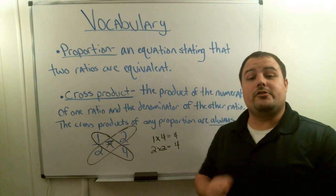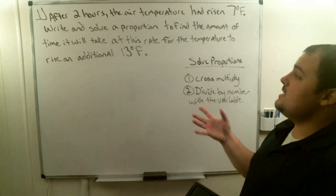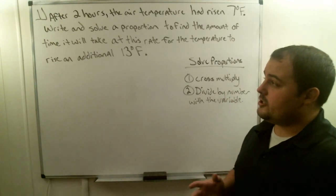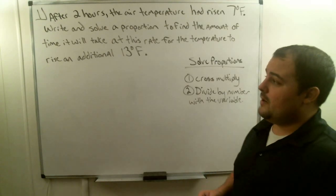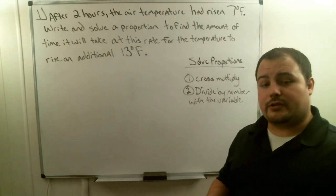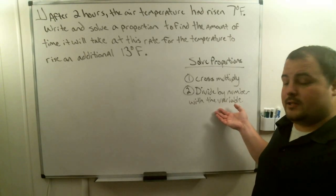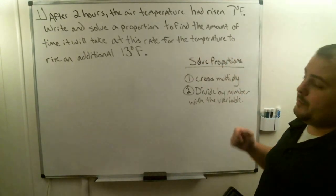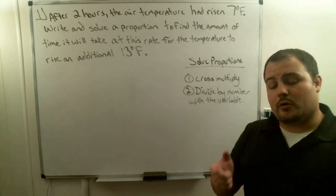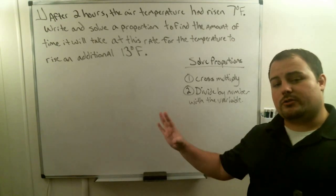Let's go ahead and move on to our examples. In example 1, what we're going to be doing is we're going to be solving a proportional problem. It says, after 2 hours, the air temperature had risen 7 degrees Fahrenheit. Our job is to write and solve a proportion to find the amount of time it will take at this rate for the temperature to rise an additional 13 degrees. We have to write a proportion, then we have to solve it.